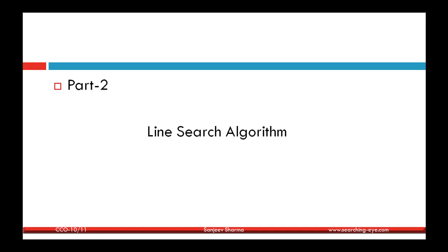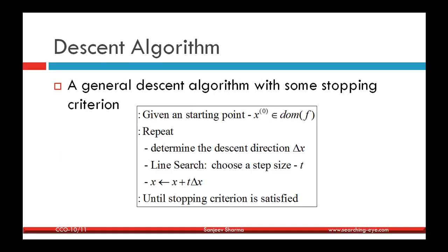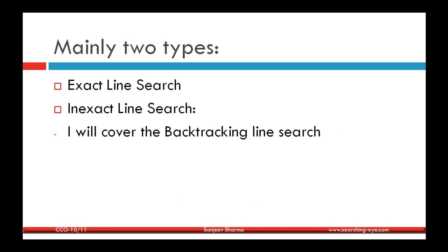Let's move on to the second part: line search algorithms. In the descent algorithm, at each iteration we use line search to find the step length t to move in the descent direction. There are mainly two types: the exact line search and the inexact line search.